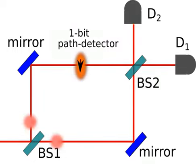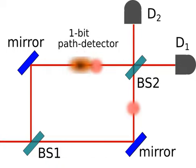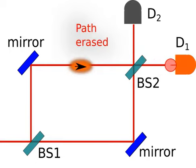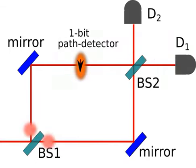This work shows that this belief is incorrect. In the delayed mode, the particle hitting a particular detector uniquely determines the X state of the path detector, and tells us that the particle followed both the paths, and not one of the paths.